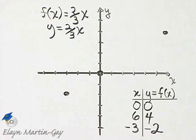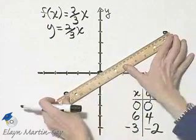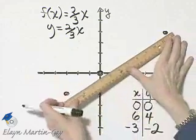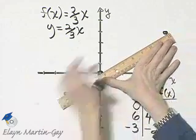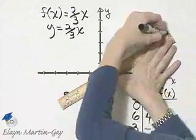And you can see that these three points do lie along the same straight line, and that line is the graph of y is equal to two-thirds x, or f of x is equal to two-thirds x.